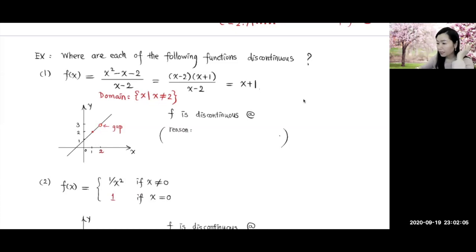So as you can see here, the function is not continuous at 2, because we have a gap here. So function f is discontinuous at 2.